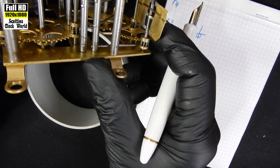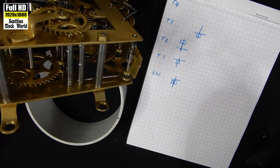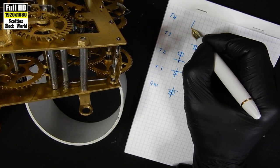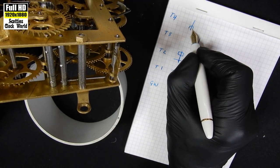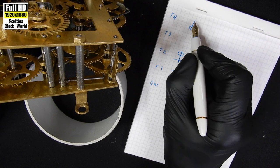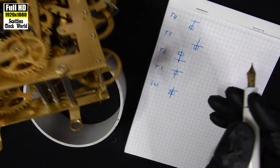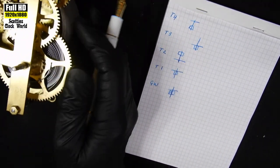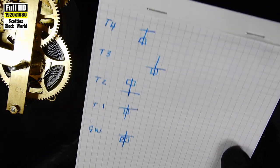Then the fourth wheel, the escape wheel, that one there. We've got an arbor. We've got a pinion down the bottom and then we've got the wheel up at the top. So that's what that looks like.